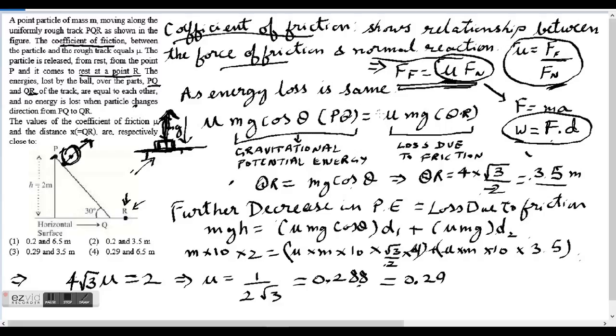Otherwise, the object will go through the table. So that's what normal force is. So by definition, mu is equal to FF upon FN.